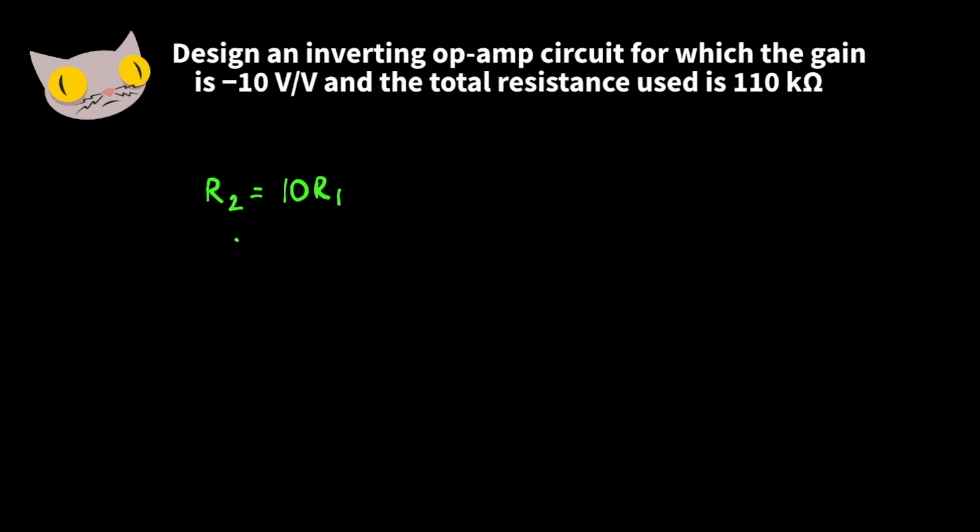So now we have R2 is equal to 10 times R1. Now, considering our total resistance is 110,000 ohms, we know that R1 plus R2 is 110,000 ohms.